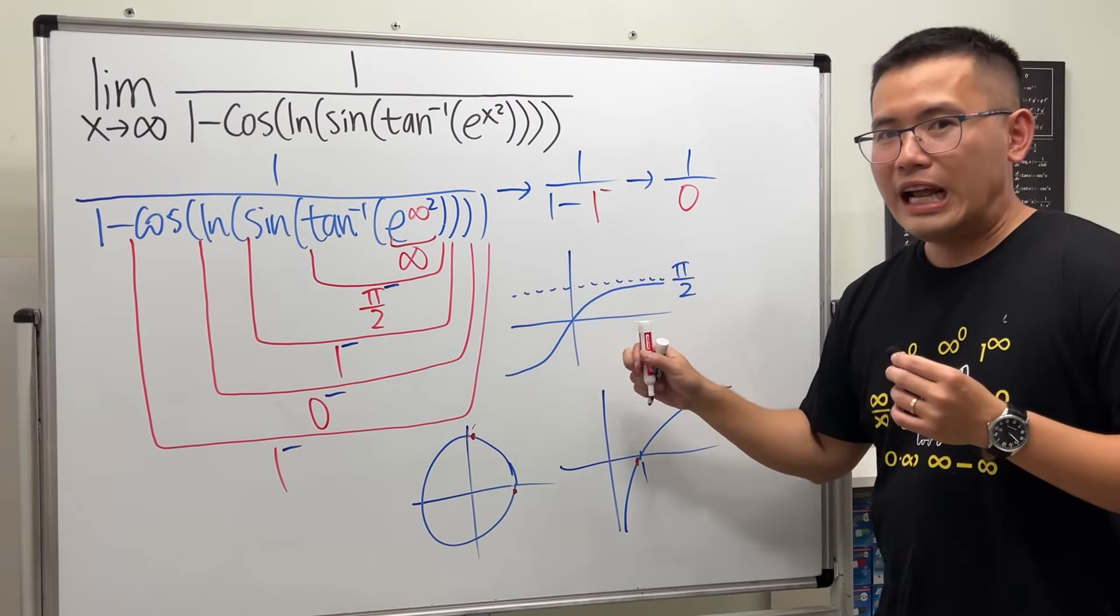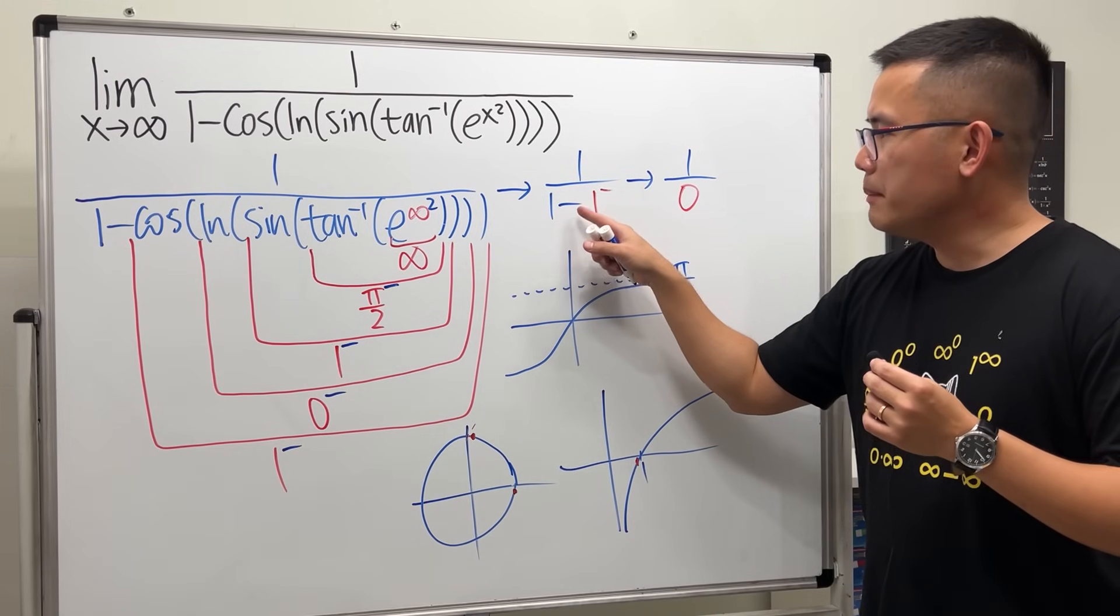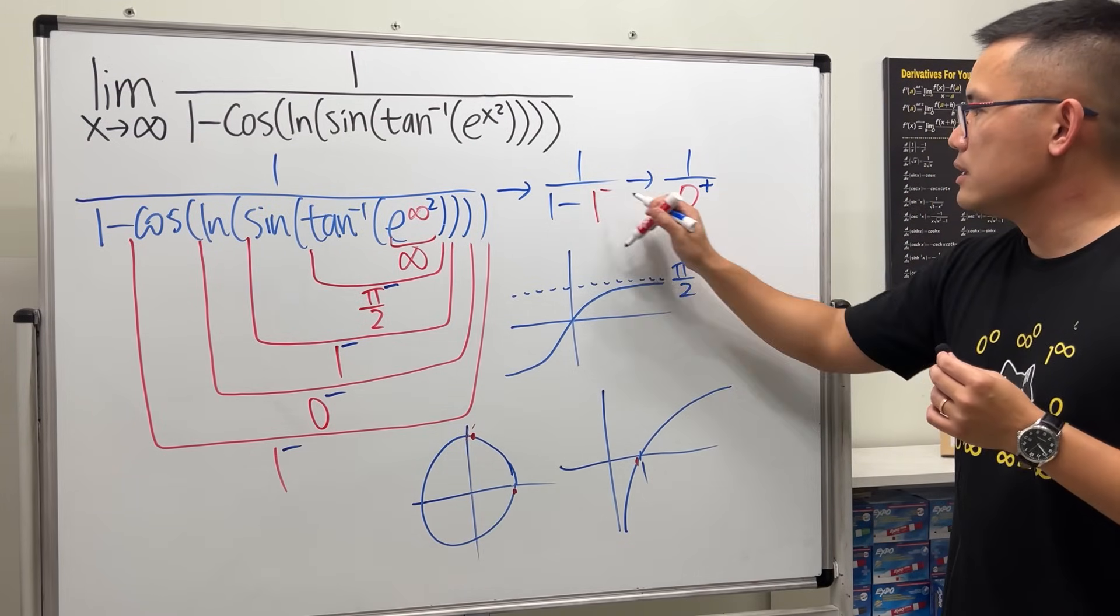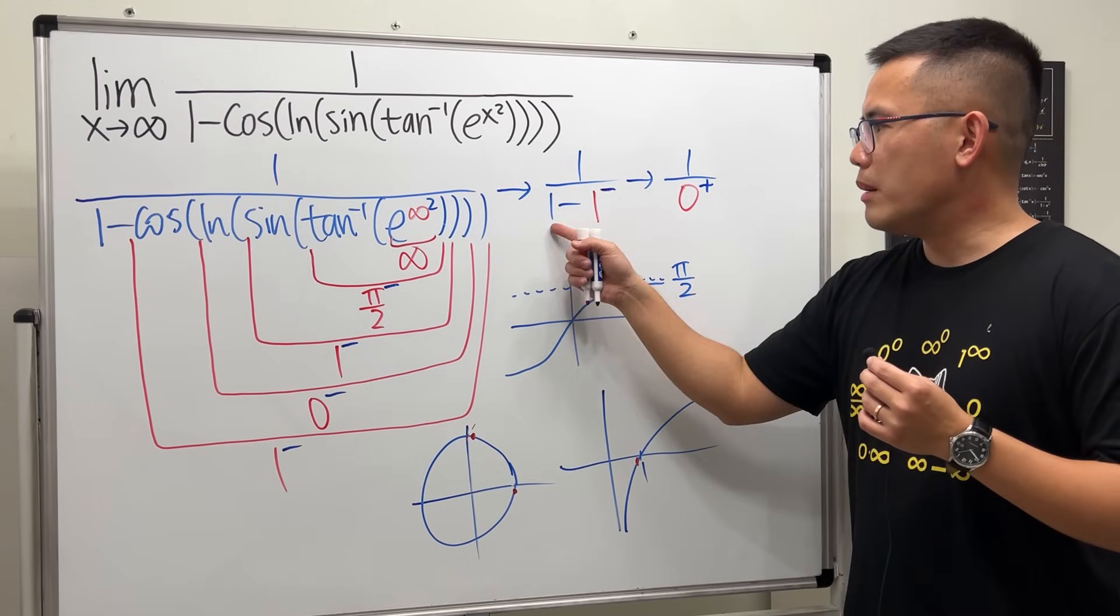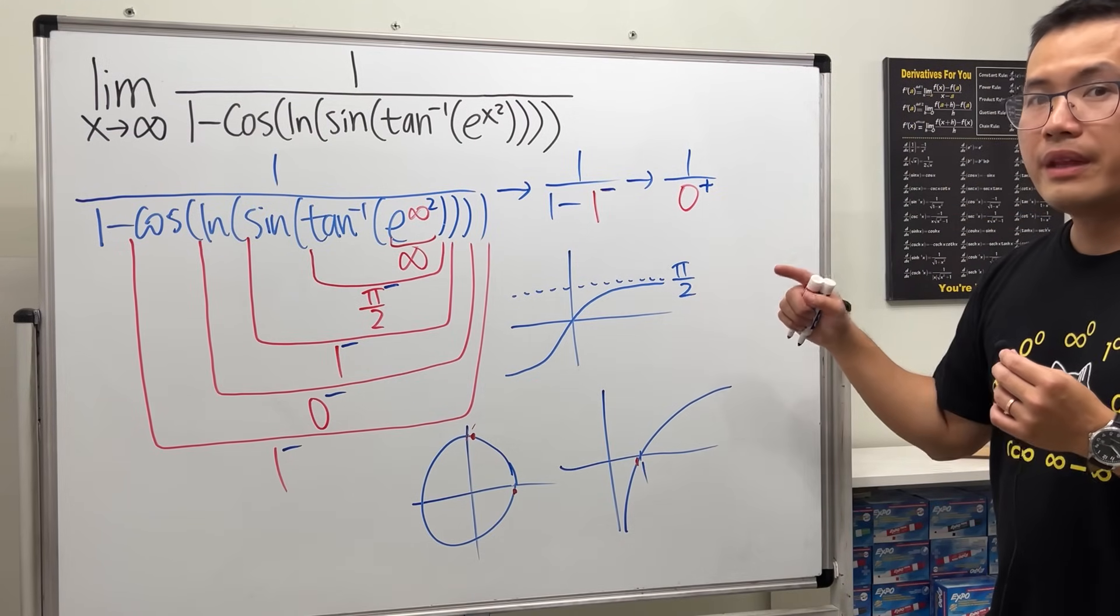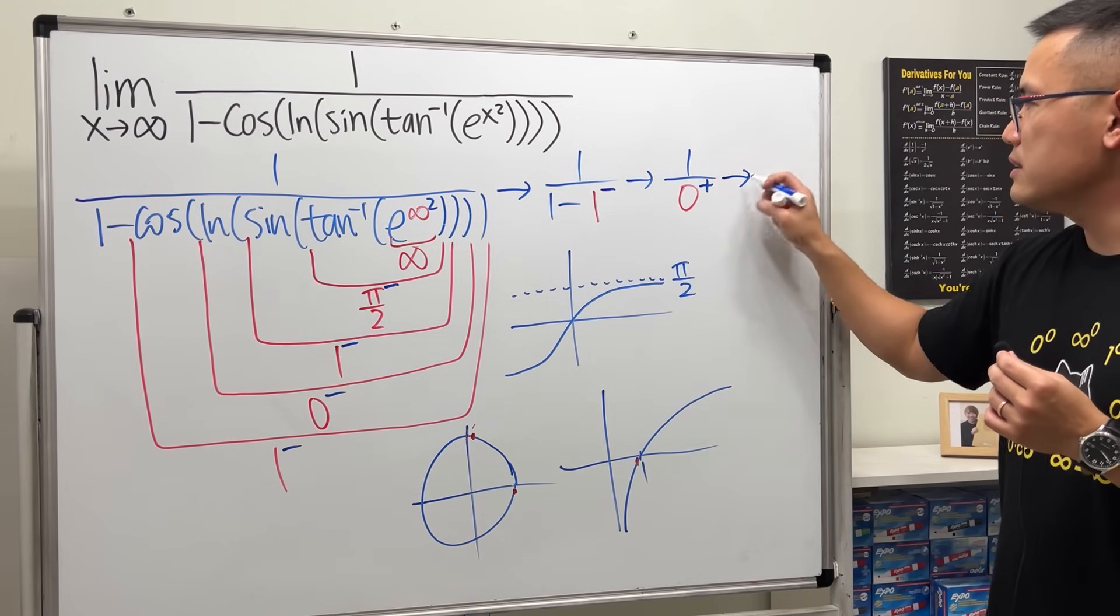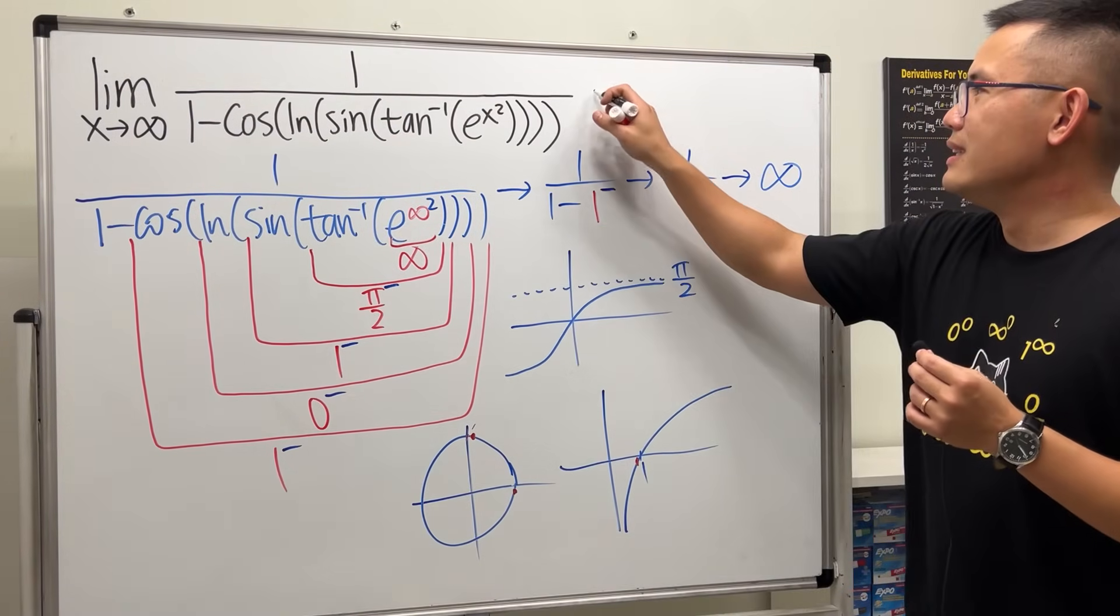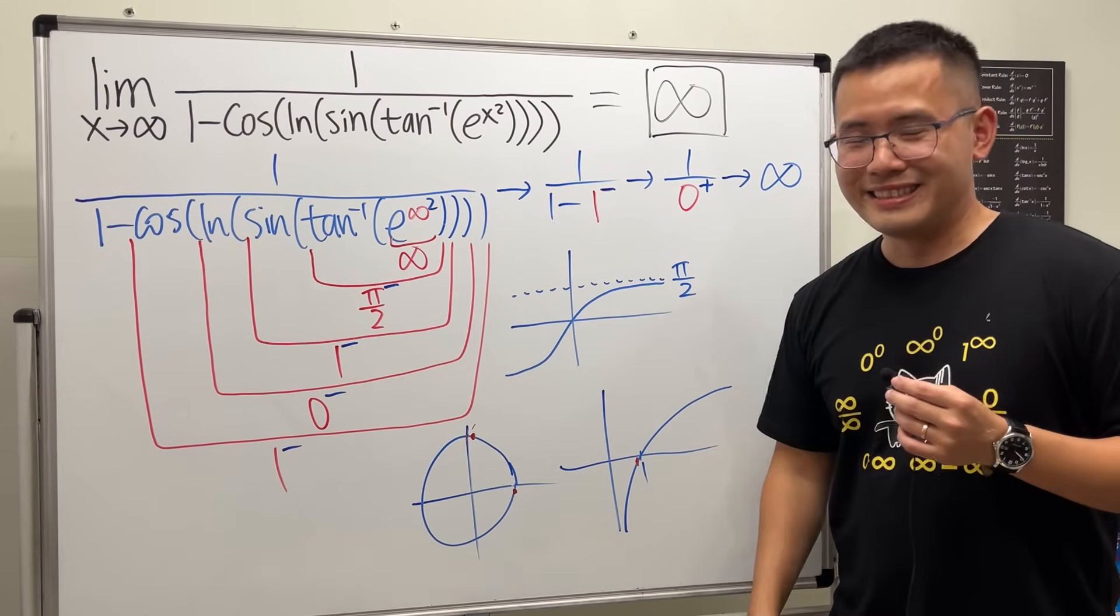This is 1 minus. Everybody knows 1 minus 1 is 0, but I know 1 minus (1 minus) is 0 plus. One minus that is a positive small number, so 0 plus. Therefore, 1 divided by 0 plus will give us positive infinity. So this limit is equal to positive infinity.